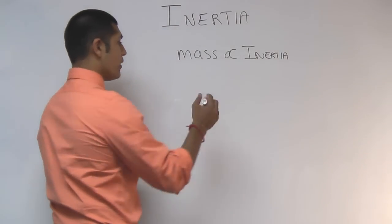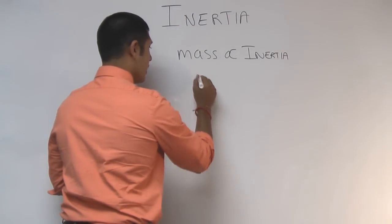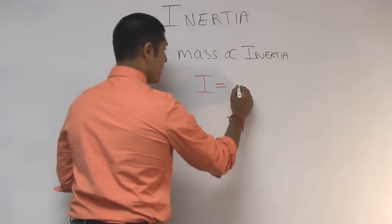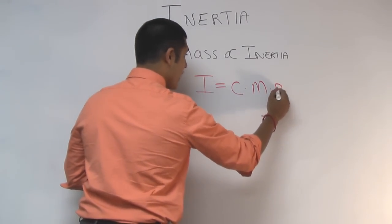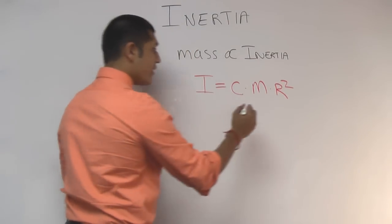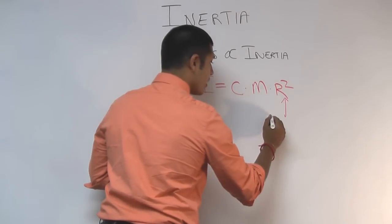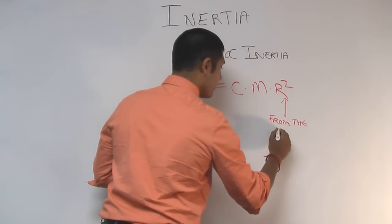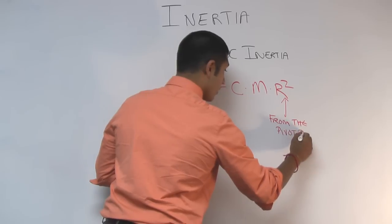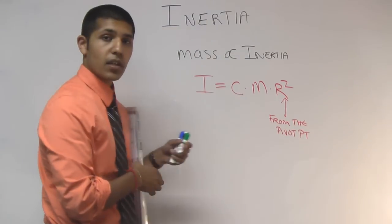So an object's moment of inertia, I, is equal to a constant C times the mass of the object times the radius squared. And this radius is always measured from the pivot point or basically from the center of the circle.